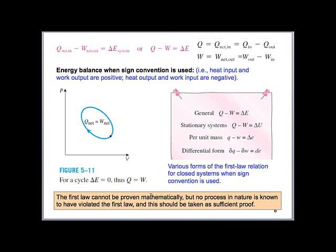An important note: the first law cannot be proven mathematically. Nothing has ever violated the first law, but it's difficult to prove mathematically because it is its own conservation law. If we could derive conservation of energy from conservation of mass or momentum, it would depend on those and would not stand as its own law. So the first law is its own conservation law, and nothing has been known to violate it.